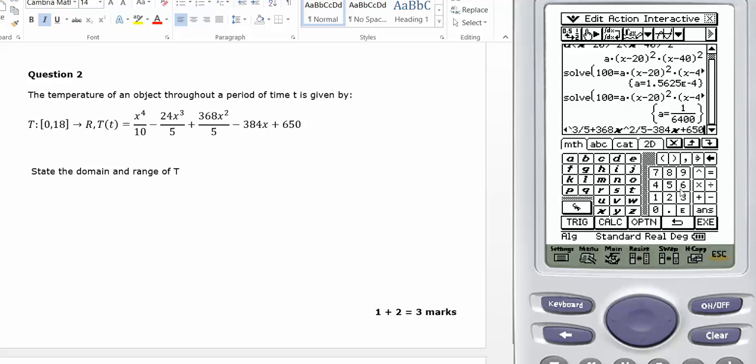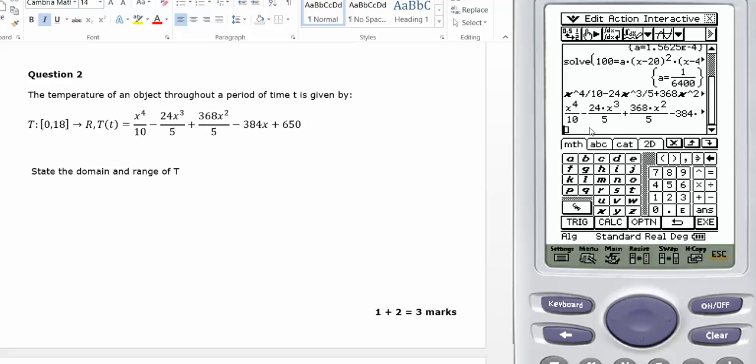Okay, so I've entered that. When I press execute, I want to make sure that's exactly what the question says. Minus plus 360 at X squared minus 384X plus 650. That's correct.